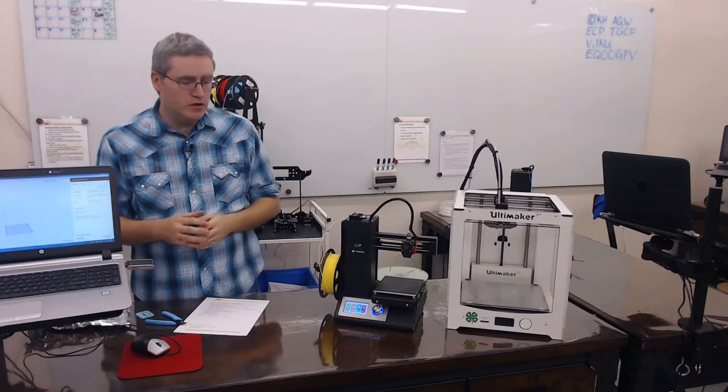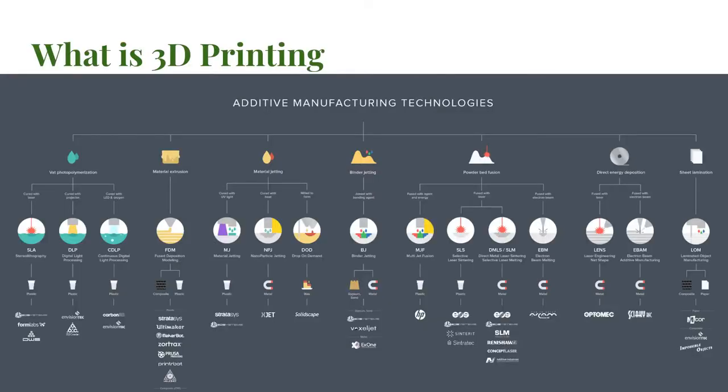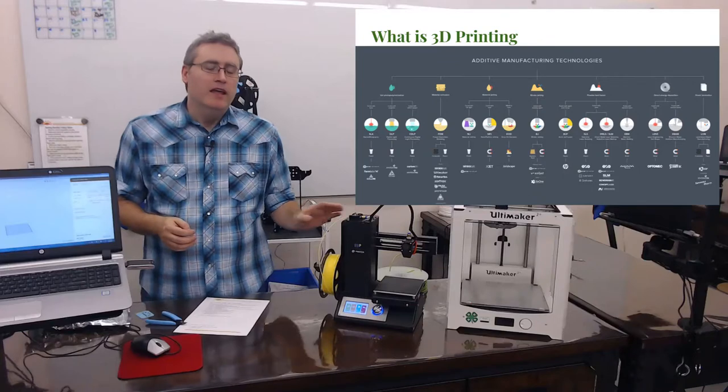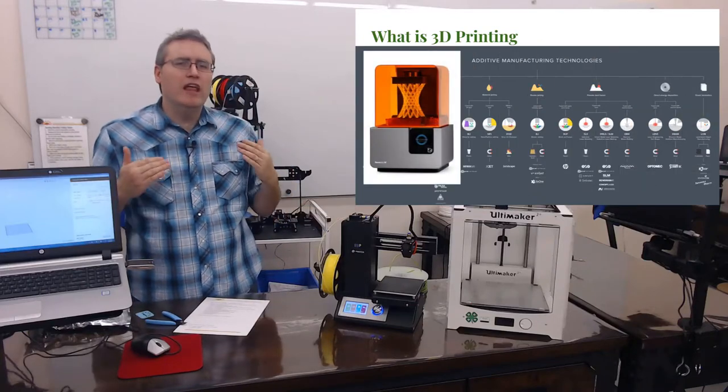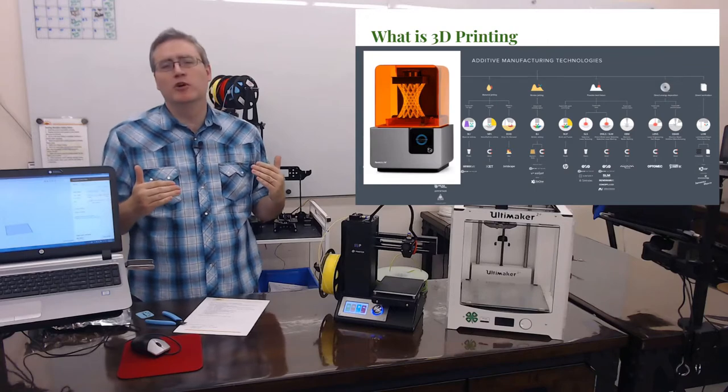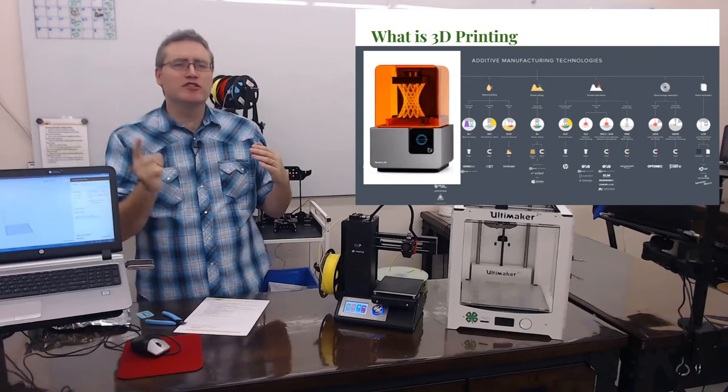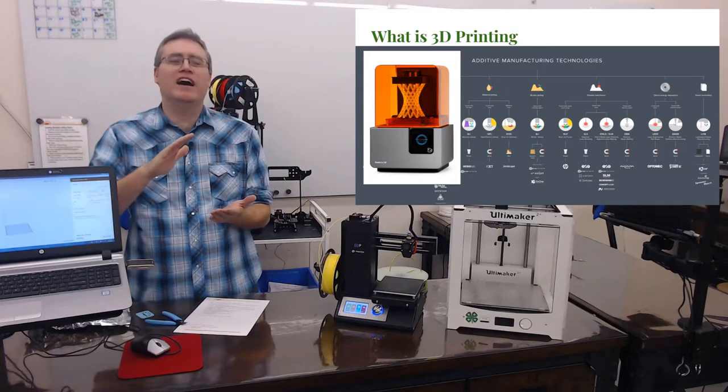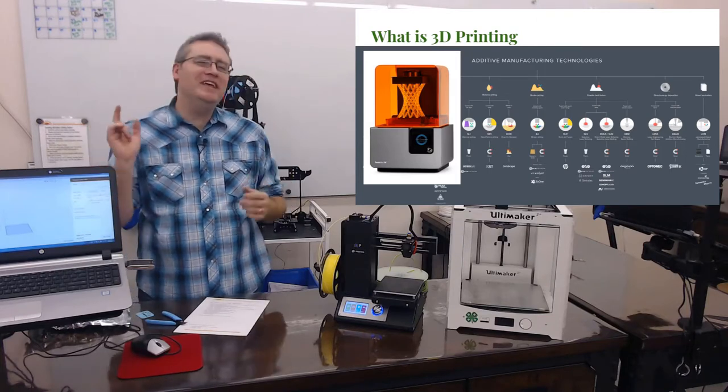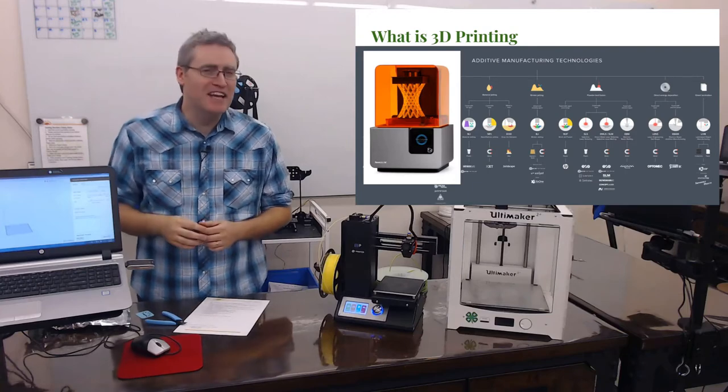Now 3D printing describes a large array of technology, not just the ones that you'll see here in the Makerspace. There's SLA and DLP 3D printers which use a light-curing liquid polymer. They use a laser to make it solid and then pull the object out of this liquid. It's really cool and we don't have any of those right now.